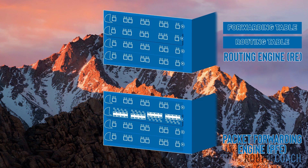The packet forwarding engine is the muscles of the device, responsible for forwarding transit traffic through the device. The routing engine is also in charge of the processes that control the device's interfaces, its system management, and user access to the device — meaning that when you use the Junos CLI or even the J-Web GUI, you are sending instructions to the routing engine. The routing engine connects to the PFE through an internal link and controls the PFE by sending up-to-date Layer 2 and Layer 3 forwarding tables.